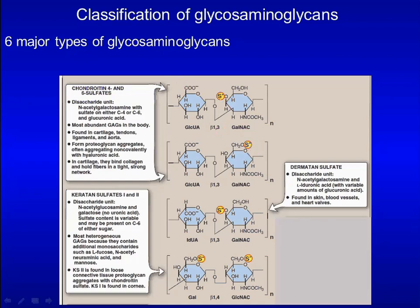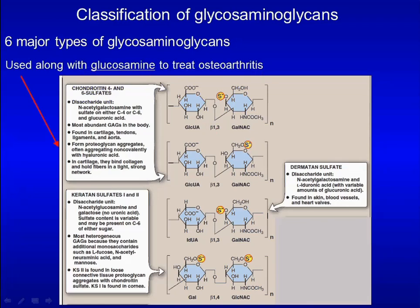Chondroitin sulfate has been used along with glucosamine to treat osteoarthritis. Other glycosaminoglycans deviate from chondroitin sulfate by a change in one or two sugars. Dermatan sulfate, for example, uses iduronic acid as the acidic sugar. Keratan sulfate uses galactose instead of the acidic sugar.